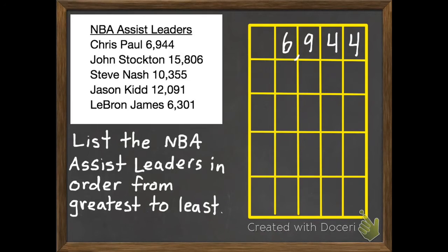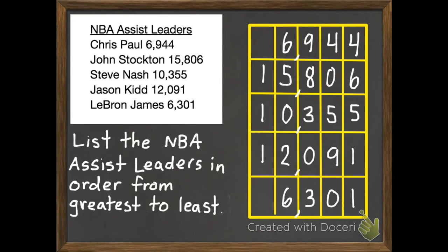John Stockton had 15,806. Steve Nash, 10,355. Jason Kidd, 12,091. And LeBron James, 6,301. Now that I have these in my place value chart, it's much easier for me to figure out the order of greatest to least.